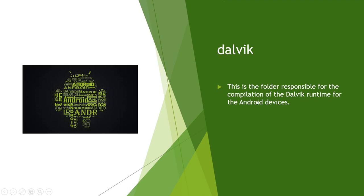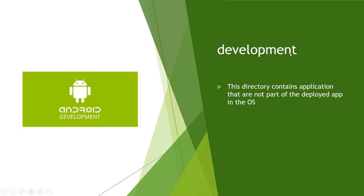Dalvik is the folder responsible for compilation of the Dalvik runtime for Android devices. Development is the directory which contains applications that are not part of the deployed applications in the OS. The development directory contains apps not part of the deployed OS apps, and there are some useful applications like Widget Builder and similar tools.